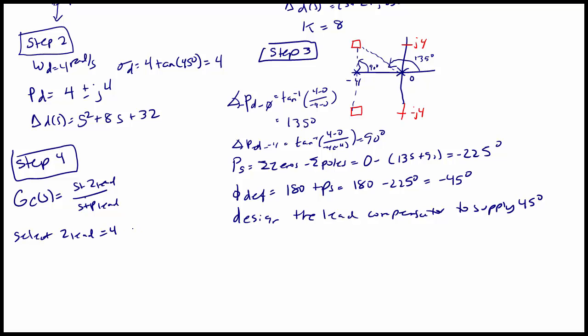And we're going to select Z lead equal to 4 in order to cancel the pole at negative 4. So now we have GC of S is equal to S plus 4 over S plus P lead.